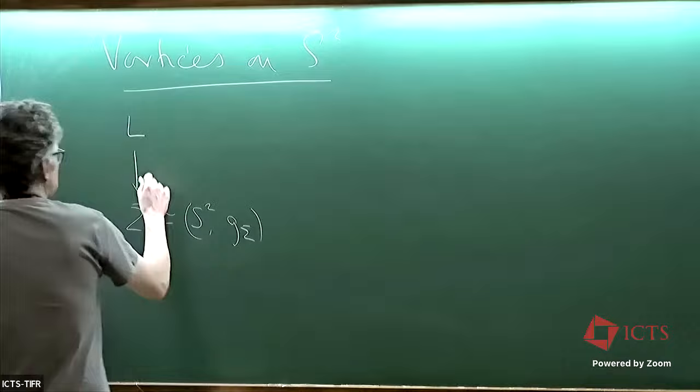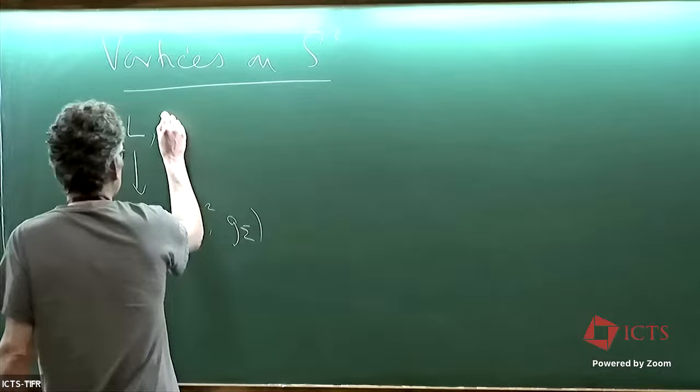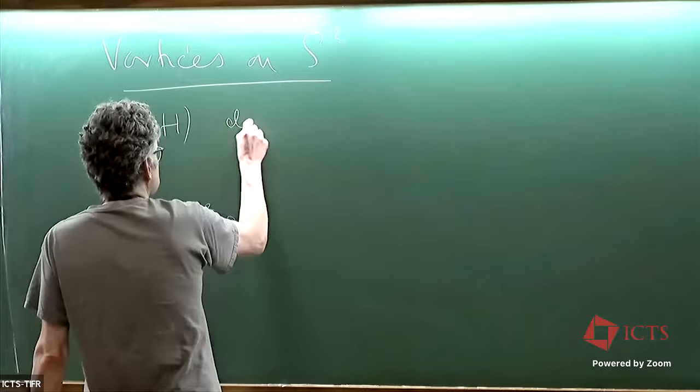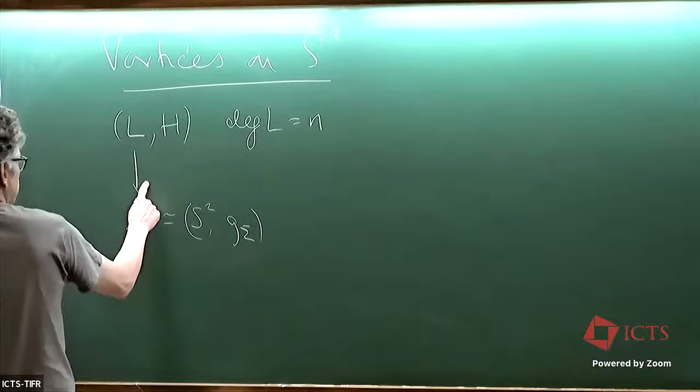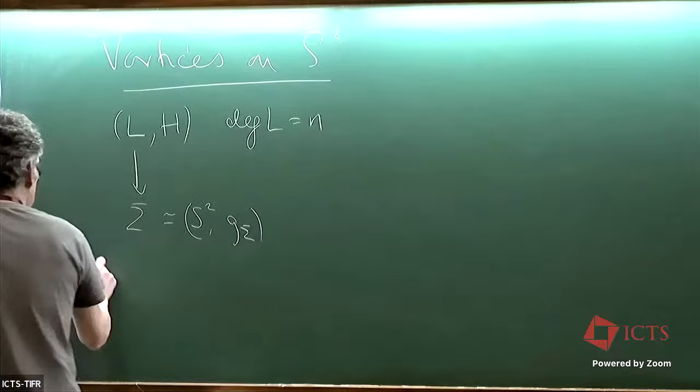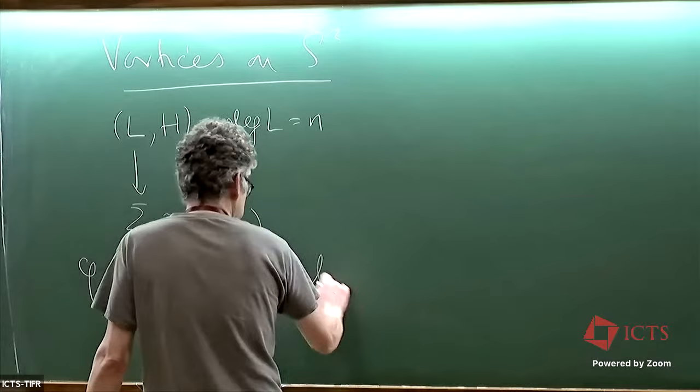We need each fiber of this line bundle to have a Hermitian inner product, so it's a Hermitian line. Let me call the Hermitian inner product H. The degree of this line bundle — which others have been calling D — I'm going to call N. That's going to be the vortex number. Our fields consist of phi, a section of the bundle, and A, a unitary connection on that bundle.